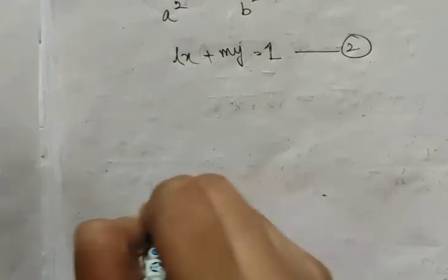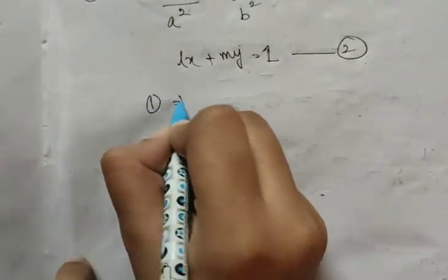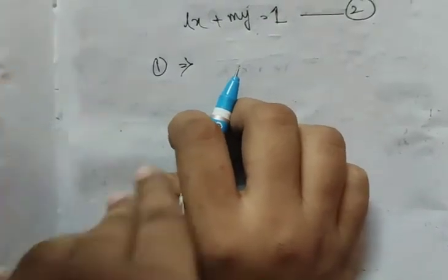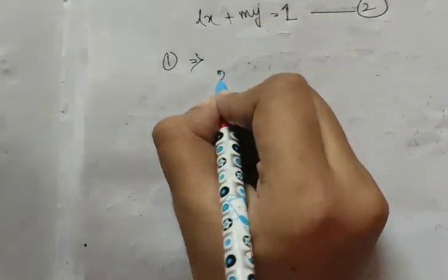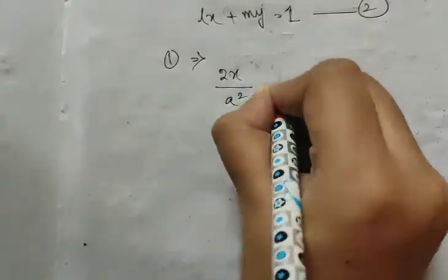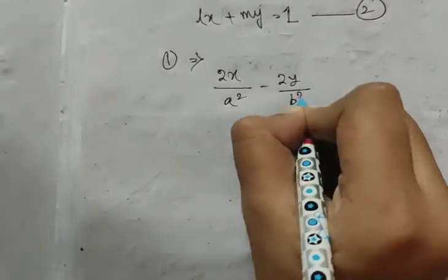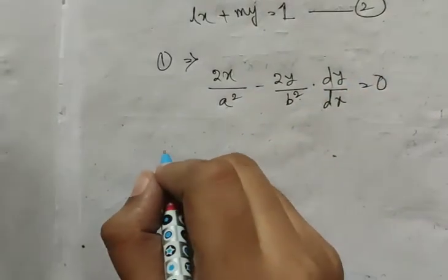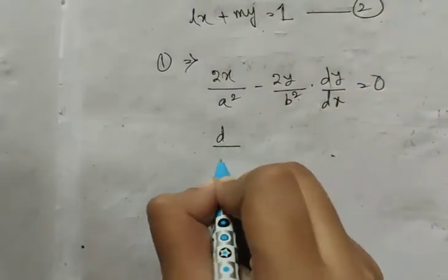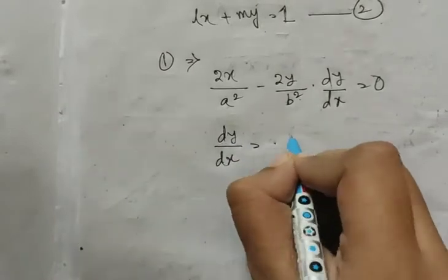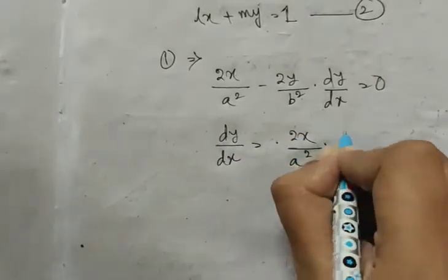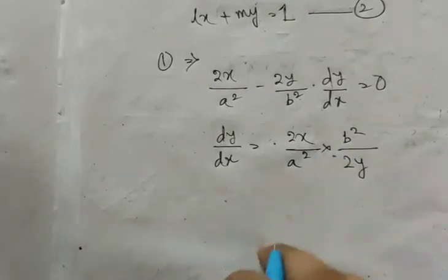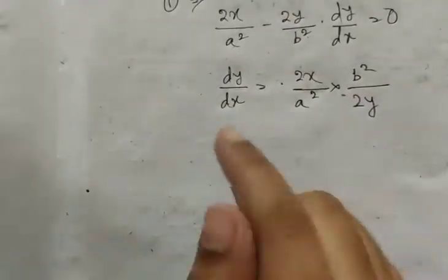তালে আমরা কি করবো? প্রথমে একটা নম্বর সমীকরণ তার আমরা derivative করে নেবো। ভেতরের ঠিক পেলাম — তো তারপর আমরা কি করবো?